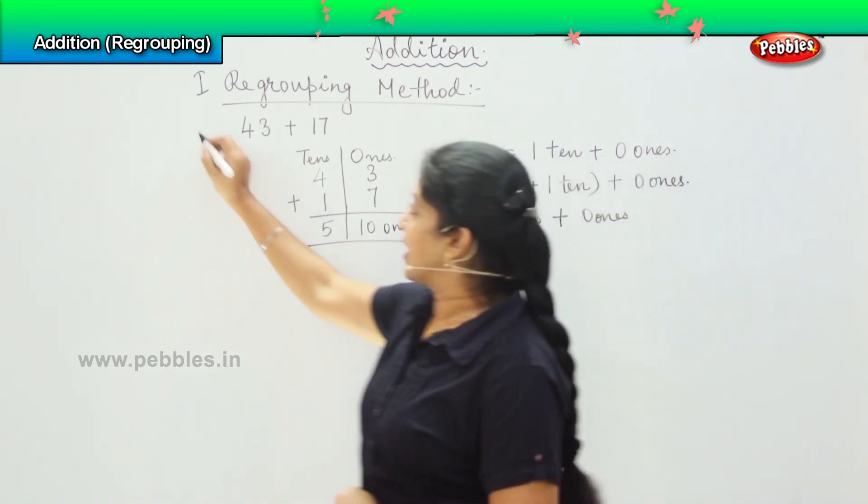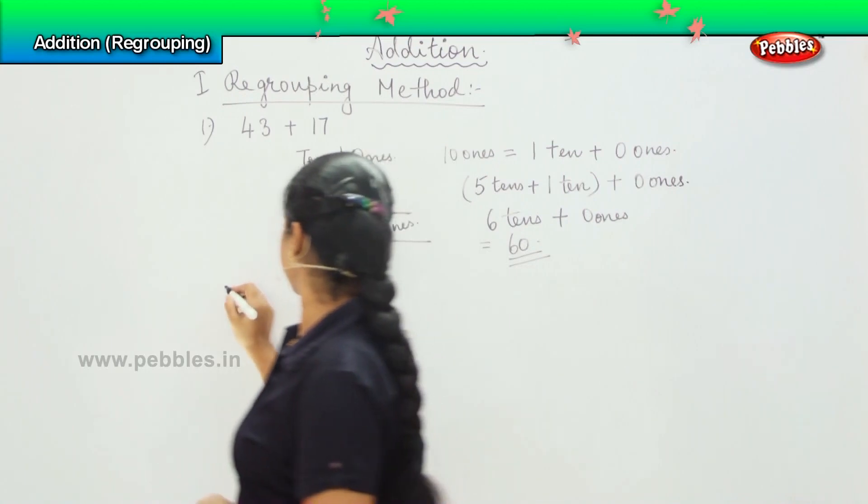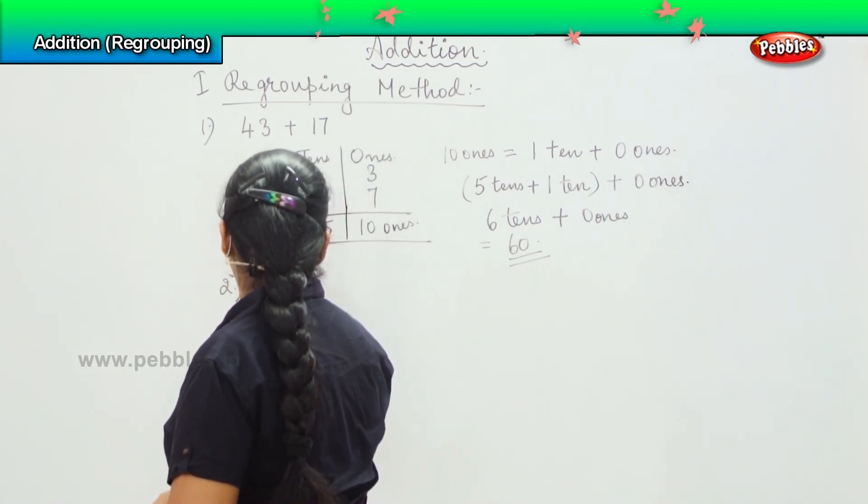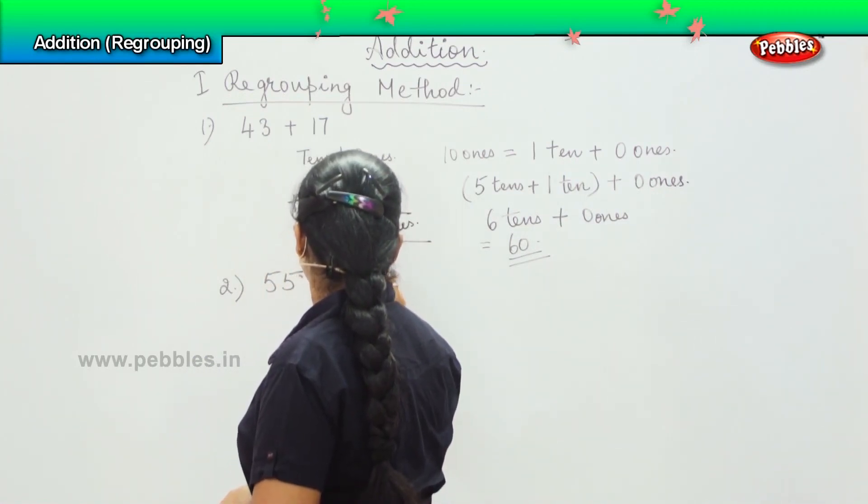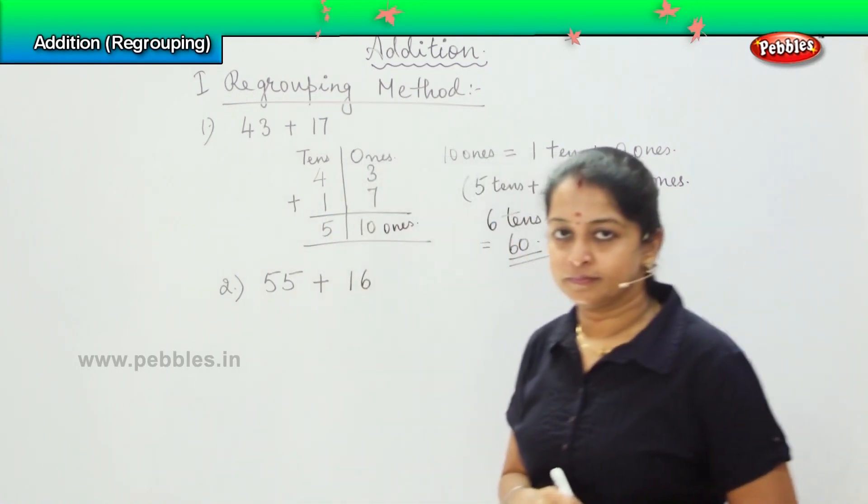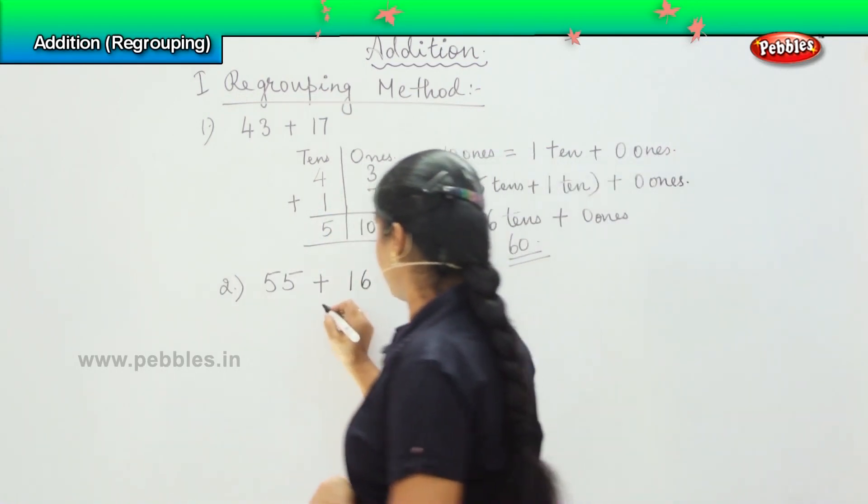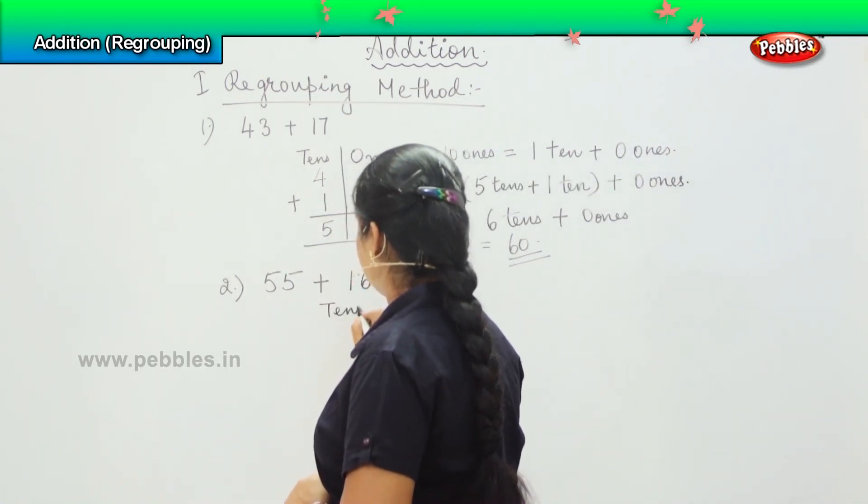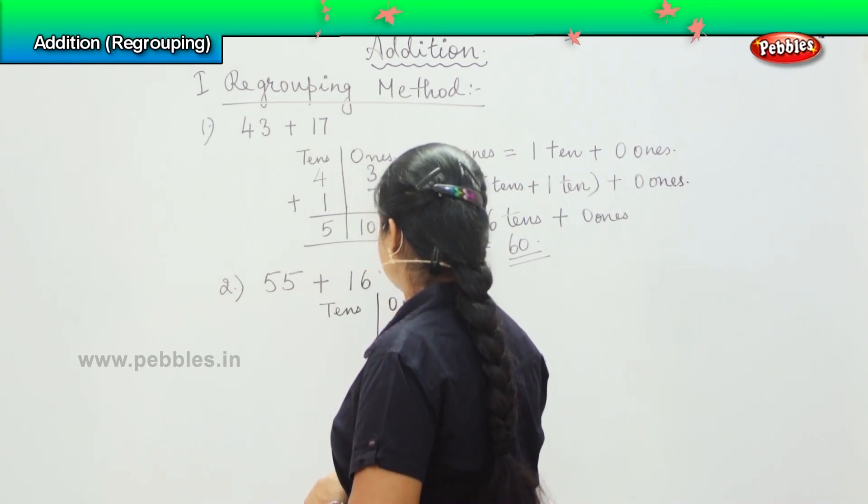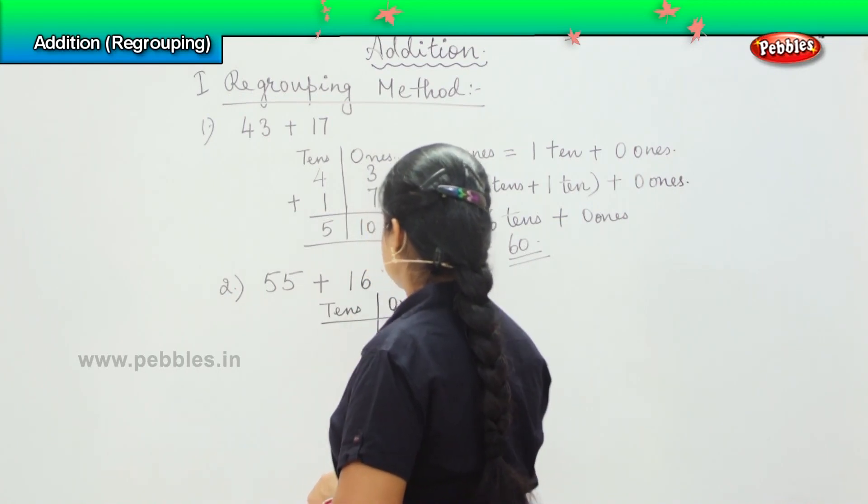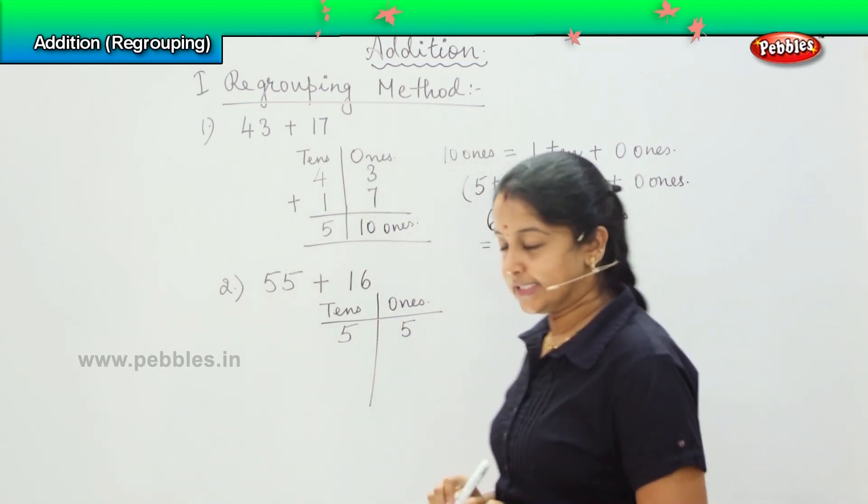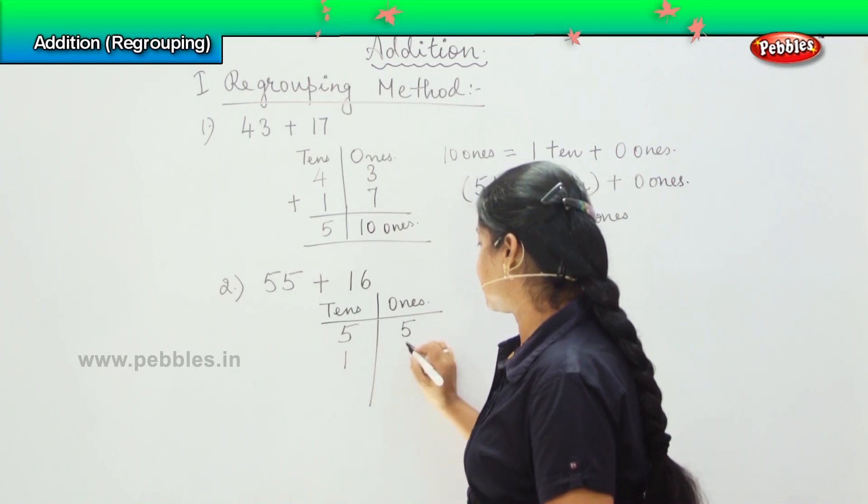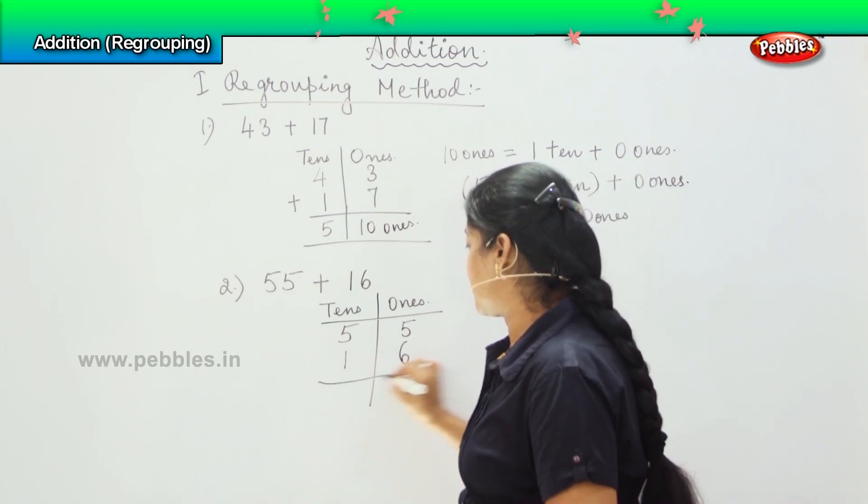Okay. Your next sum is 55 plus 16. So what is the first step? First I will divide the numbers in tens and ones. So 55 I can write as 5 tens and 5 ones and 16 I can write as 1 ten and 6 ones.